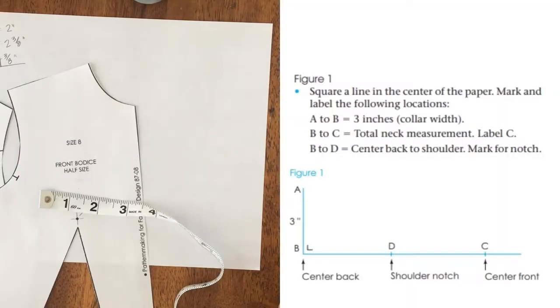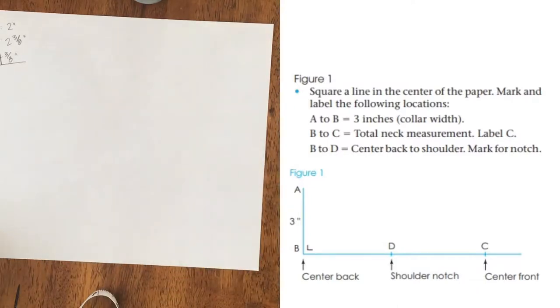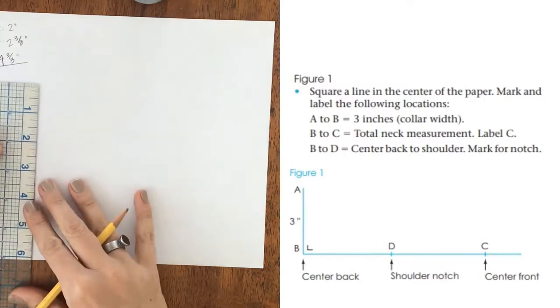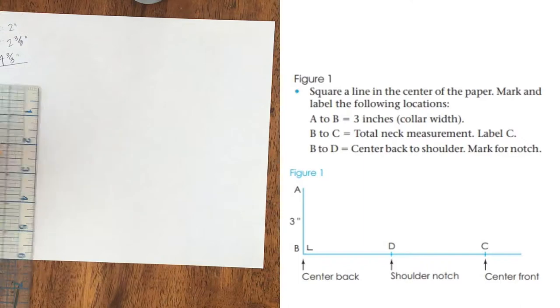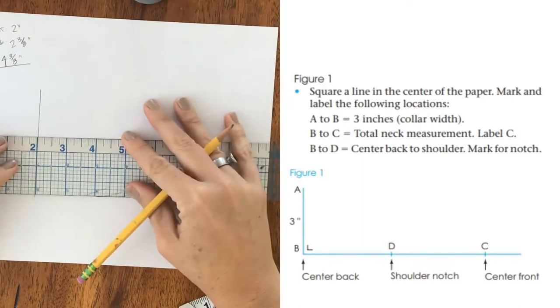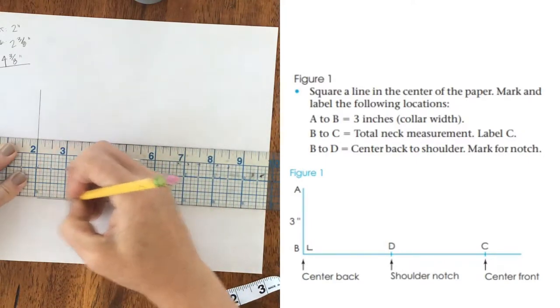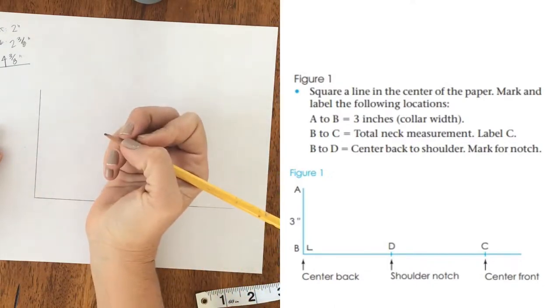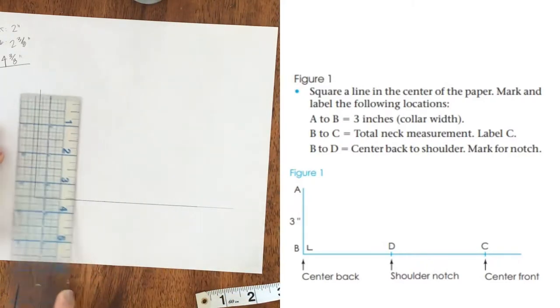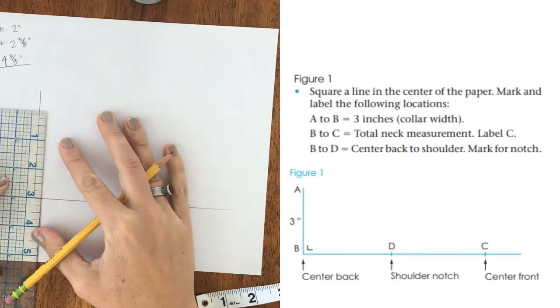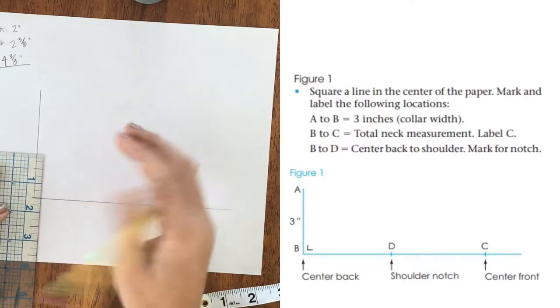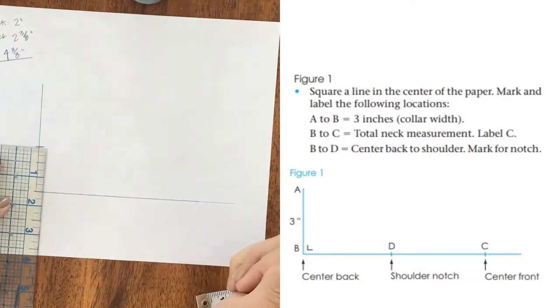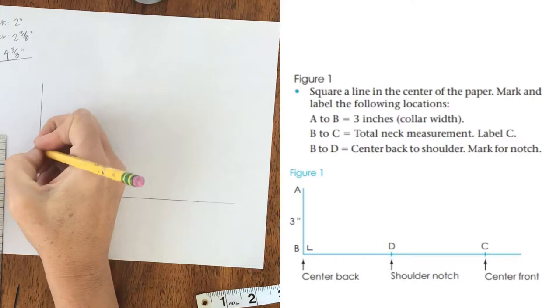Okay, so figure one, we're going to square a line in the center of the page, mark and label the following locations. Okay, so A to B, they want three inches. I am working on half scale. So what is half of three inches? It is an inch and a half. So this will be A and B.